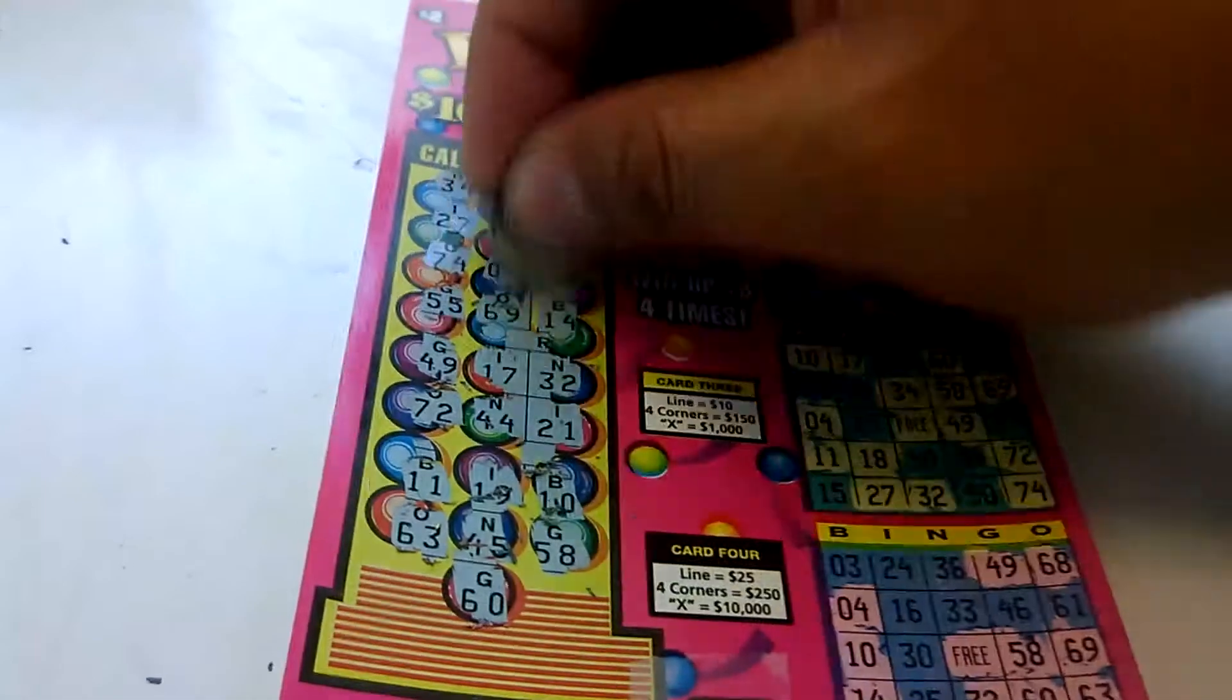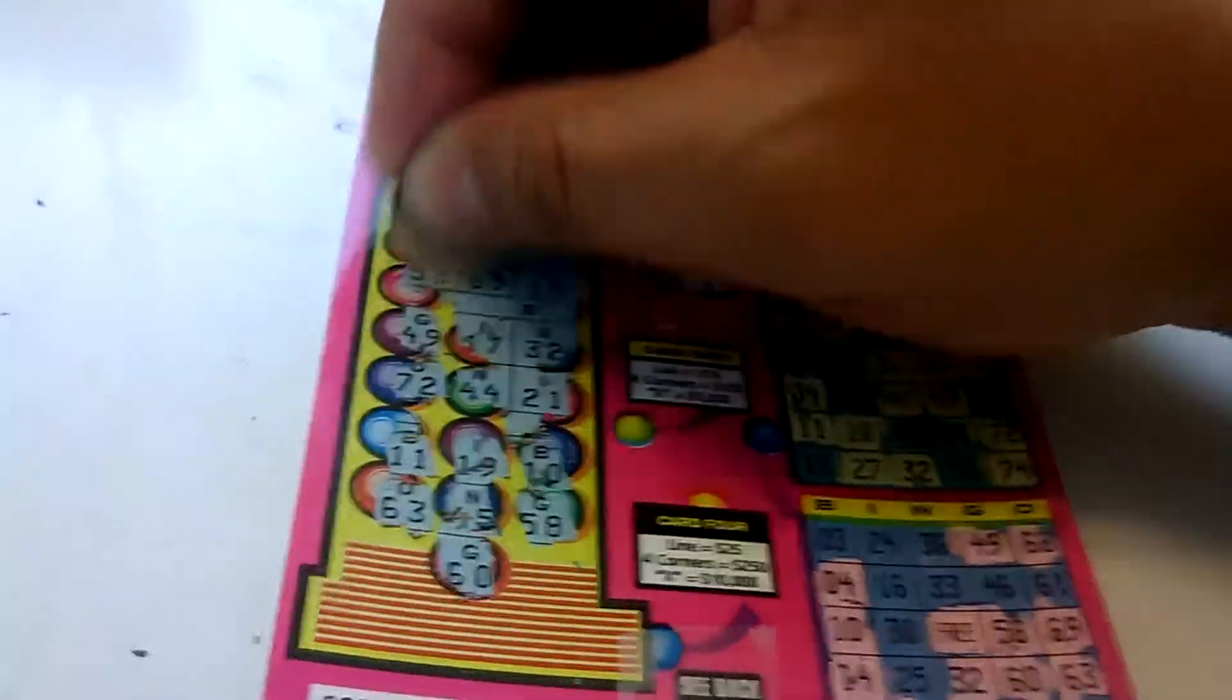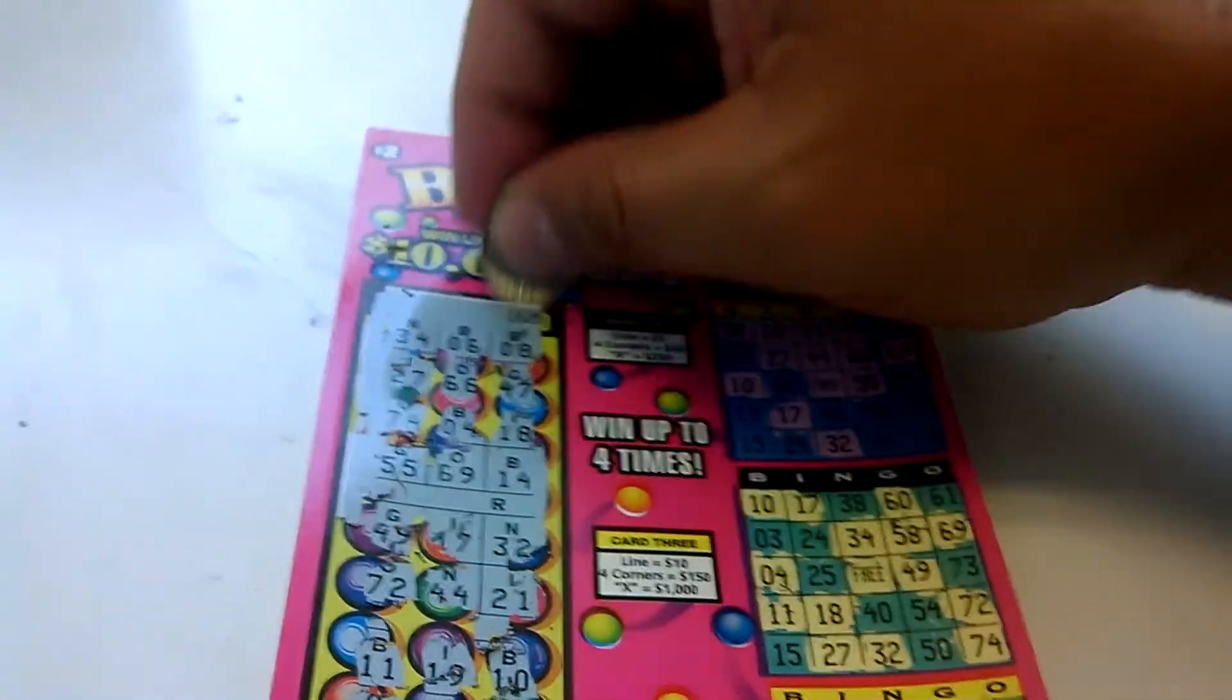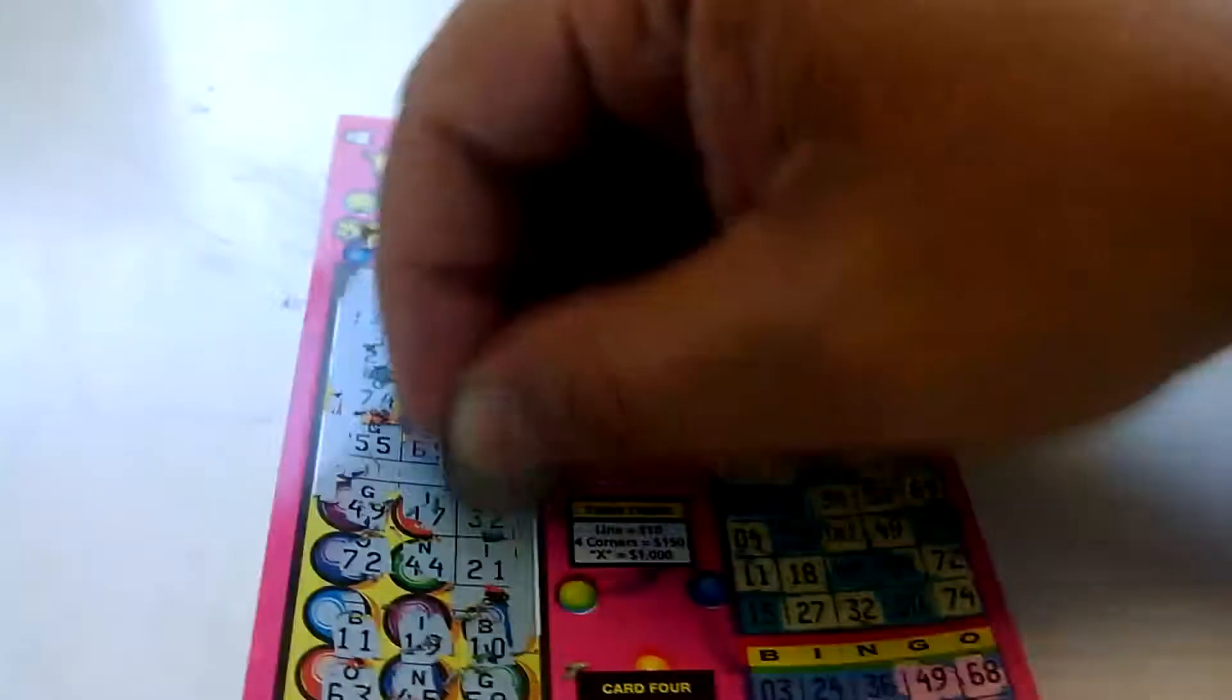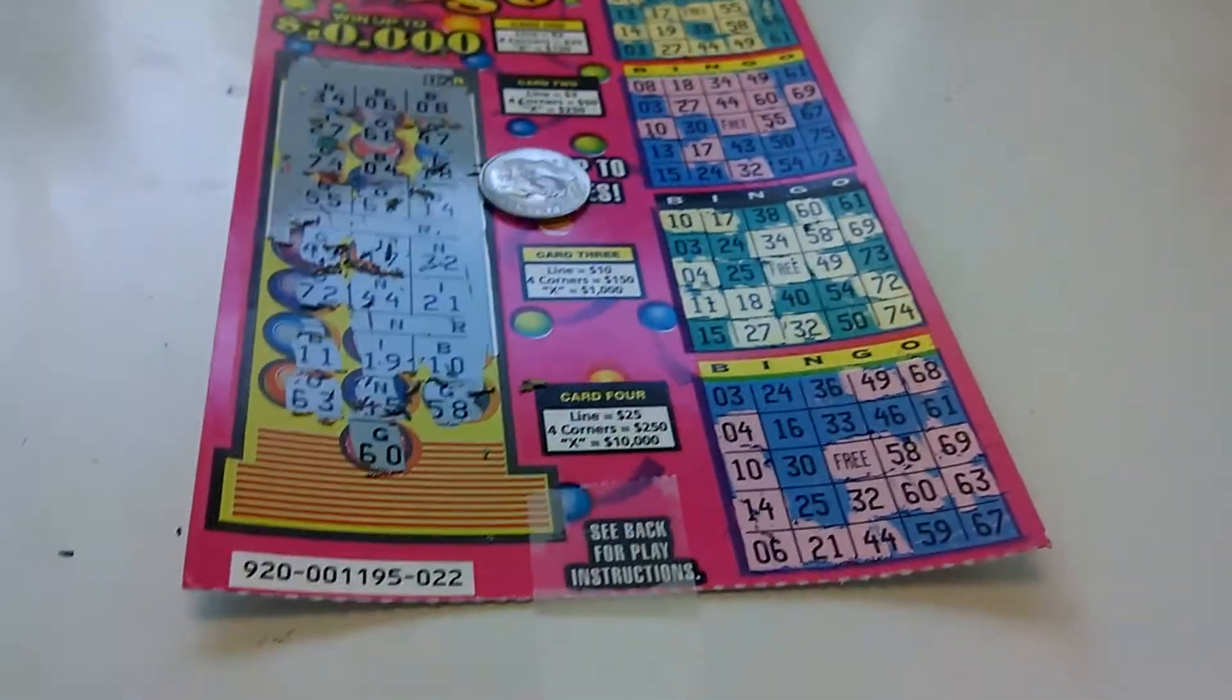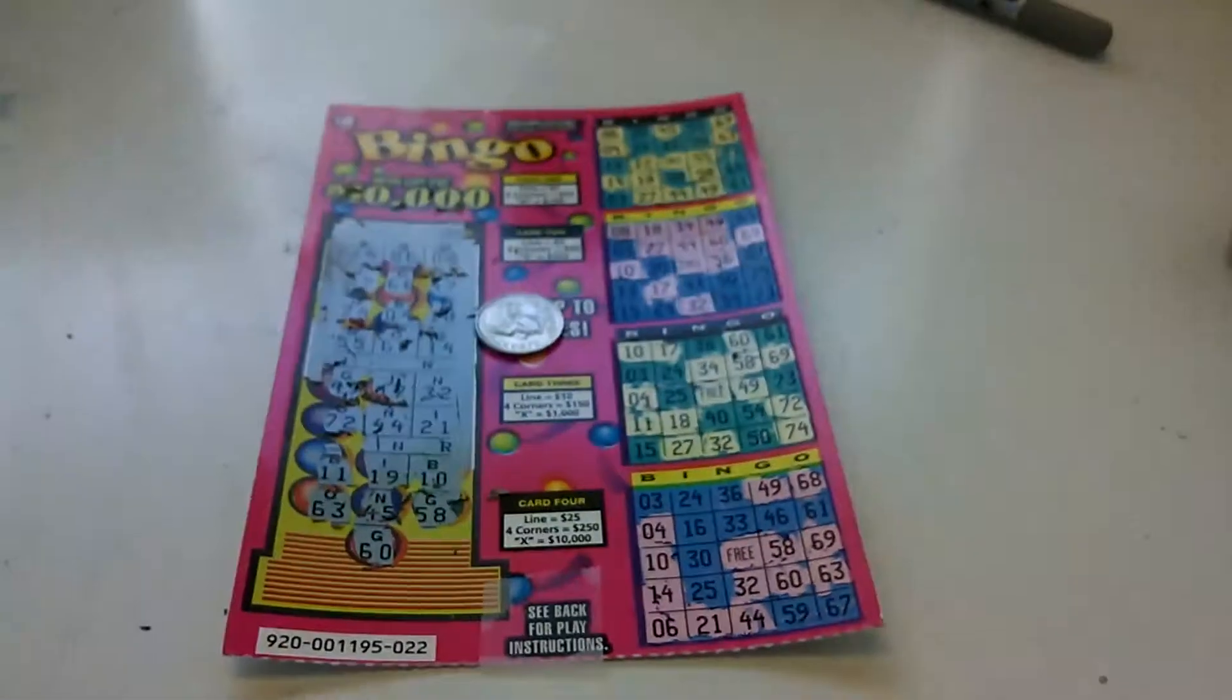But it looks like this one's a loser. There's the R. Trying to verify it with the losing code for Arizona. R and R N. So this one's a loser folks. Ticket number 22. Until next time. Later.